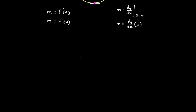Now slope is not just solely for functions. Let's suppose I have a circle — that is my attempt at a circle. The theory still applies. This is not a function, but there can still be slopes along the circle. There's a slope at the bottom, at the top, here — any point on this circle can have a slope. That slope is equal to the slope of the tangent to that circle.